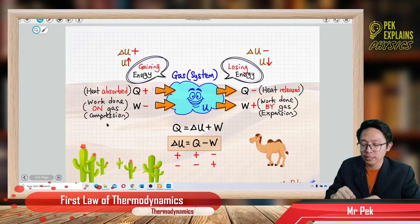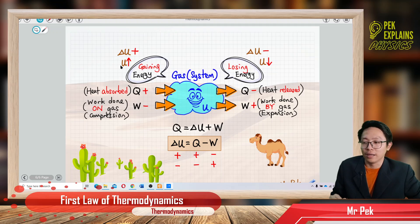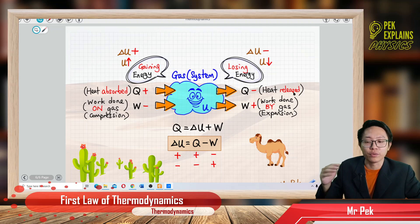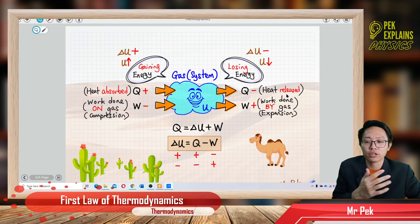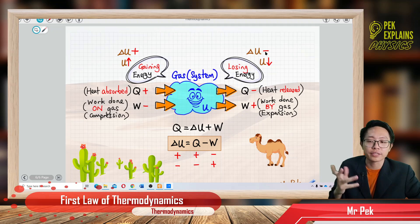Work done on the gas, or compression, means the person provides energy to the gas, so the gas gains internal energy. Now, how about losing energy? The gas loses energy when heat is released from the gas to the surrounding. When heat is lost to the surrounding, Q is negative, so the internal energy will decrease — delta U is negative.